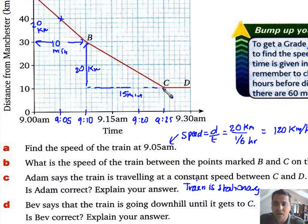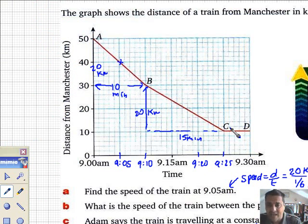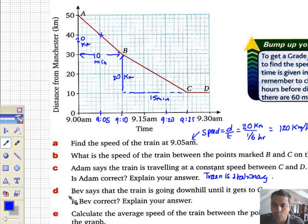What's the reason for it? After five minutes, the train is no nearer to Manchester. Don't just say the train is stationary. At C, the time is 9.25, and the train is 10 kilometers from Manchester. And at D, the time is now 9.30, and still 10 kilometers away from Manchester. Therefore, the train is stationary. Give a little bit more evidence.